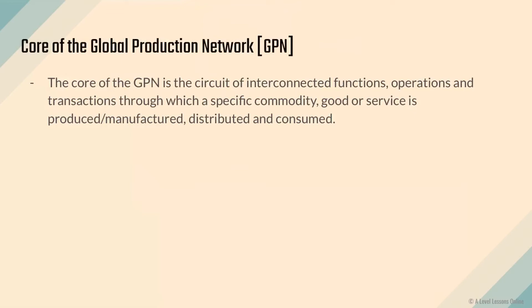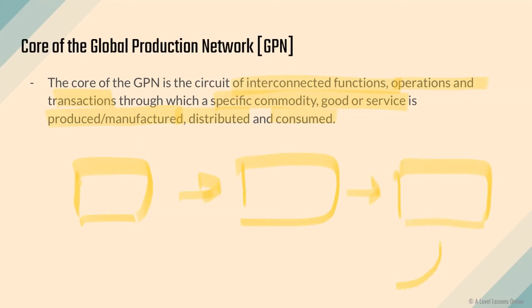So what exactly is a GPN? A GPN is essentially the circuit of interconnected functions, operations, and transactions through which a specific good, service, or commodity is produced, manufactured, distributed, and consumed. Think of it like a supply chain — it goes from the source of raw materials, followed by production, then distribution, and finally the consumer. That's the entire global production network flow.